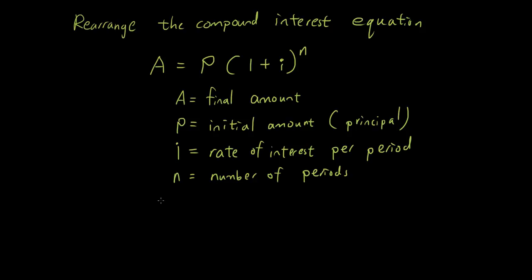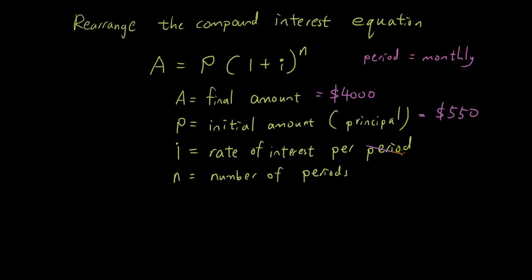In any question, I have to give you three of these variables and ask you to find the one I haven't given you — you need three to figure out the other one. So here: A is 4,000, meaning the investment ends up at four thousand dollars. P is 550, so initially you put 550 in the bank and it grows to 4,000. The period is monthly.